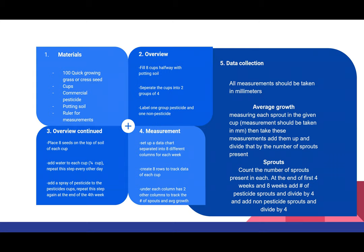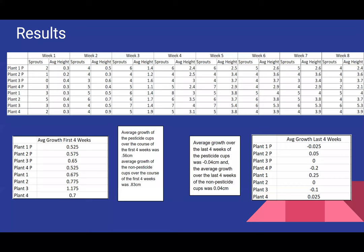For measurement, I set up a data chart separated into eight different weeks. Each week I measured the number of sprouts present to track how many had sprouted, whether any sprouts had died, and also the average growth. I did this by measuring the height of each sprout in each cup and dividing by the number of sprouts present.